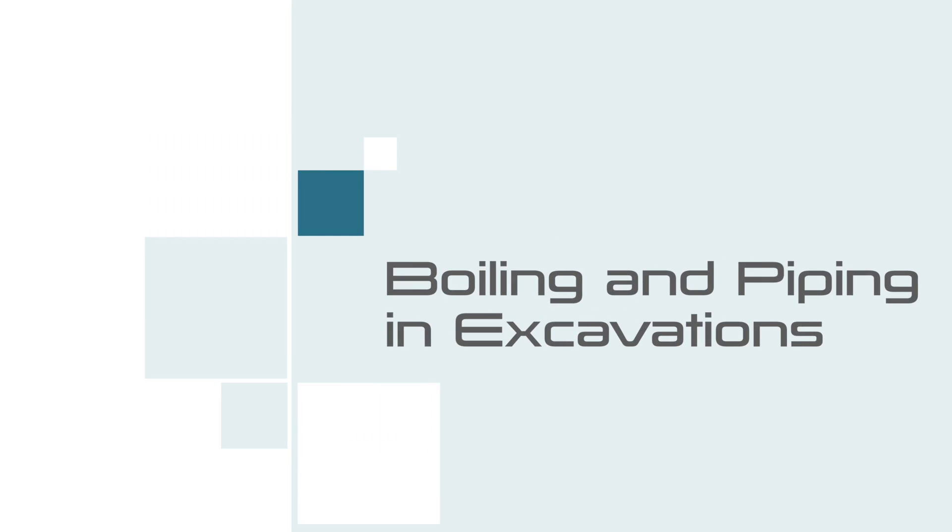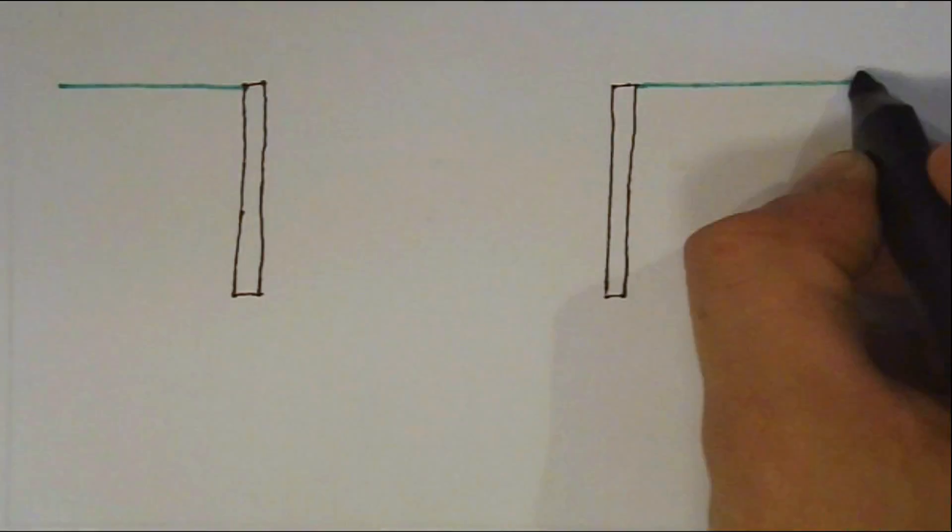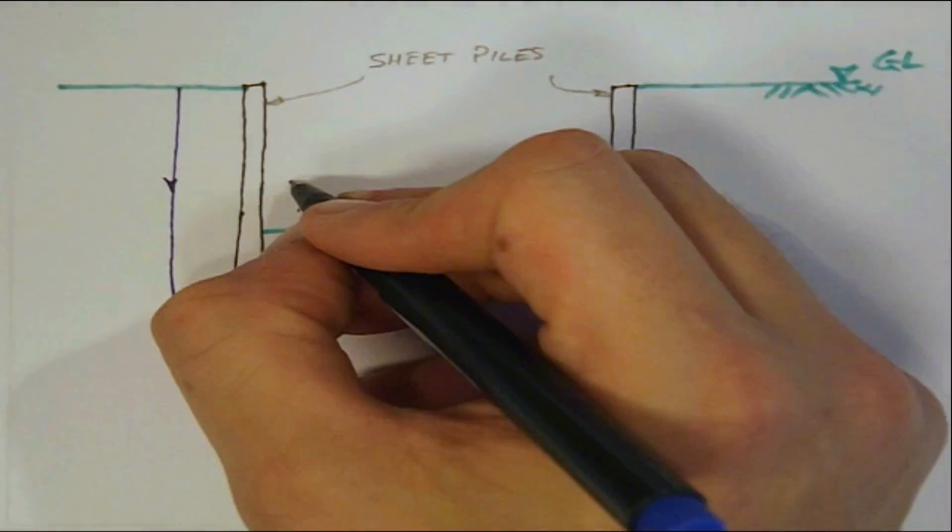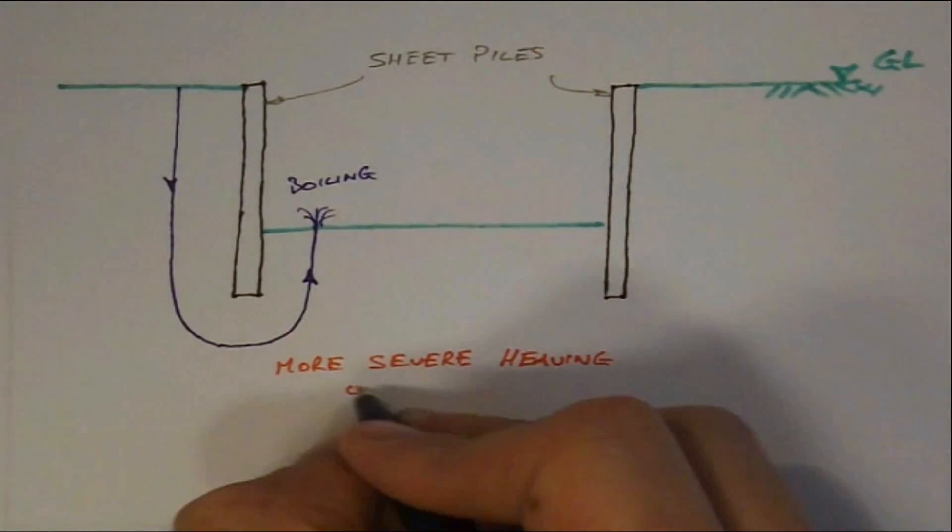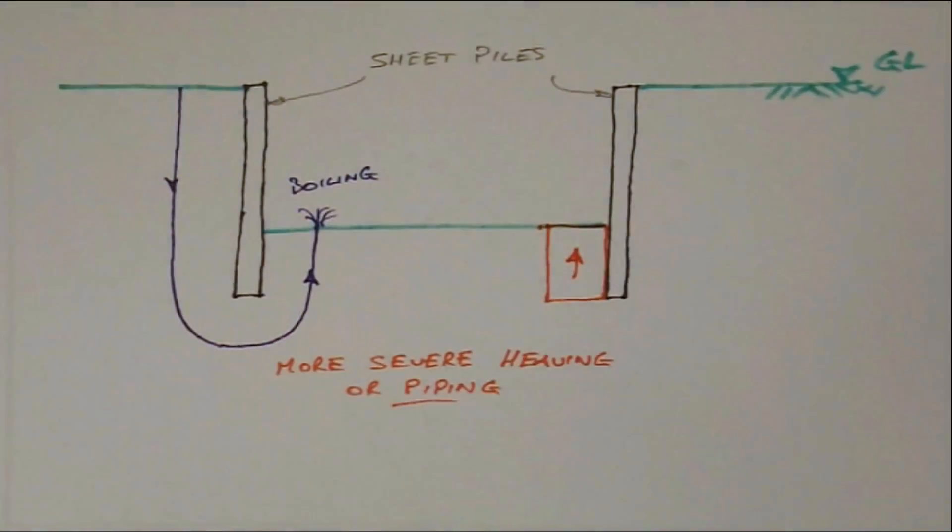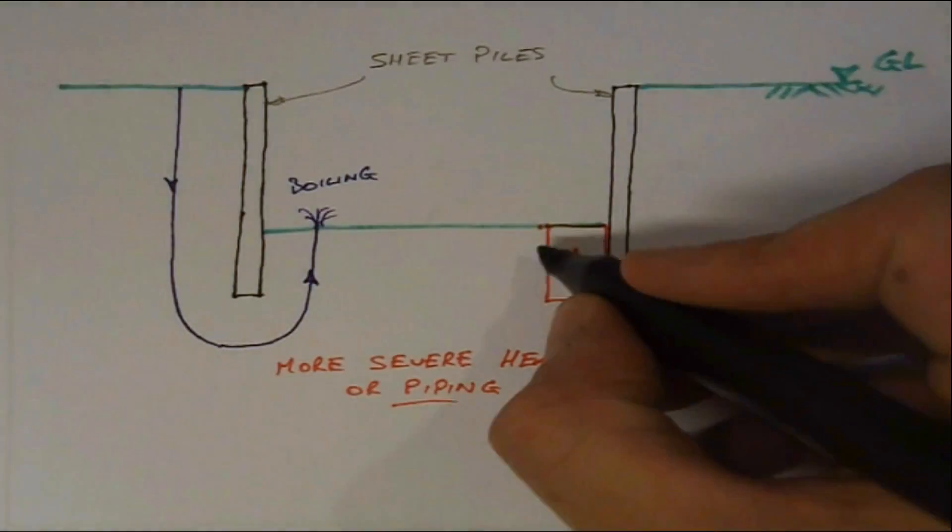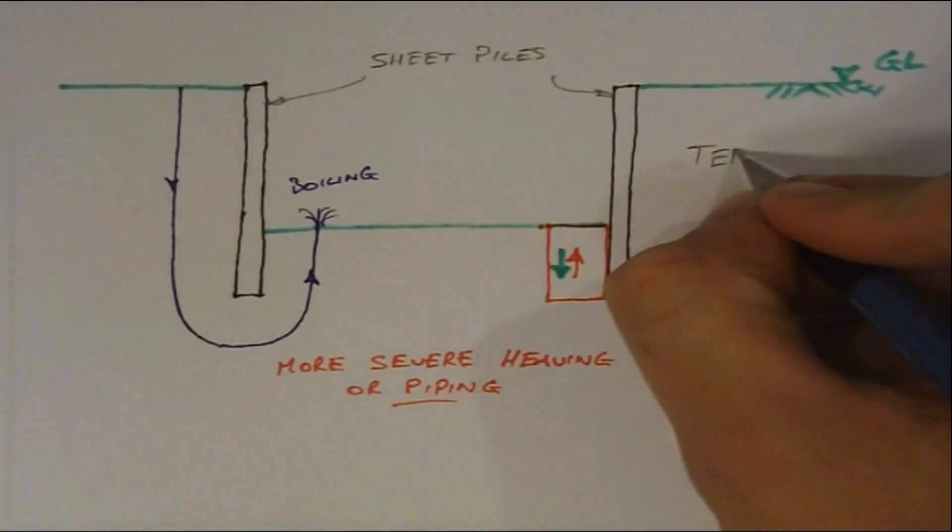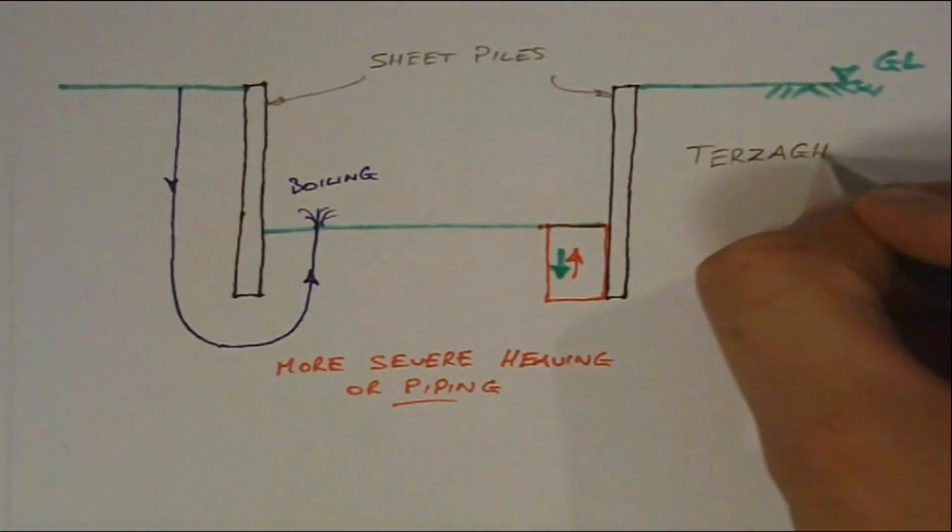We have just dealt with the phenomena of localized boiling, but we also need to examine the effect of a more severe heaving or piping, which involves a greater volume of soil becoming unstable. This occurs when the average upward seepage balances the downward gravity forces of the soil in front of the sheet pile wall as shown.